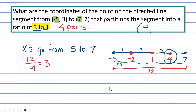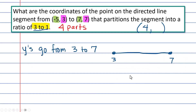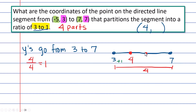We're going to repeat that process for the y coordinates. My y's are going from three to seven. How far is that? Seven minus three is four. I need to split four into four parts, so each one is worth one. Starting at three: add one gives four, add one gives five, add one gives six, add one gives seven. Which point splits into a ratio of three to one? One, two, three — right here. So the y coordinate of our answer is six.